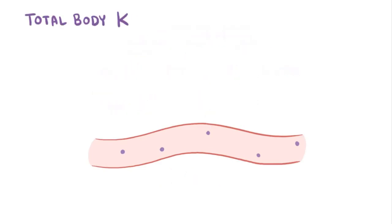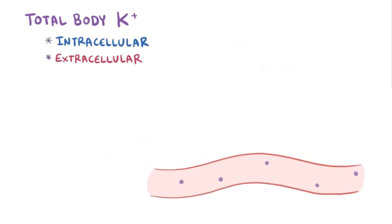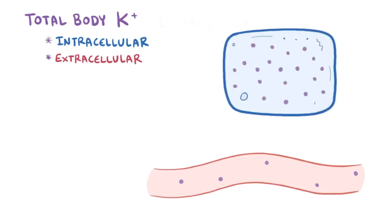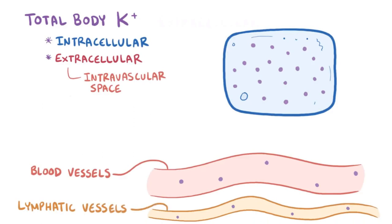Total body potassium can essentially be split into two components: intracellular and extracellular potassium, or potassium inside and outside cells, respectively. The extracellular component includes both the intravascular space, which is the space within the blood and lymphatic vessels, and the interstitial space, the space between cells where you typically find fibrous proteins and long chains of carbohydrates, which are called glycosaminoglycans.